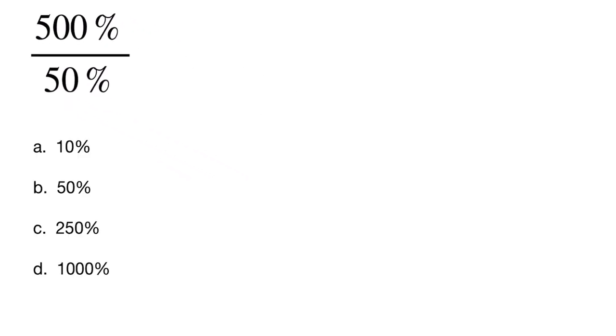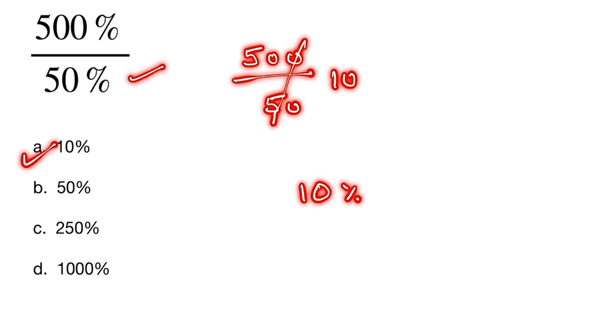So this is our question: 500% divided by 50%, and these are all our options. I challenge you, 90% of people solve this wrong. Generally, people solve this like 500 by 50 is equal to 10, and 10%. There is that option, but it is wrong.